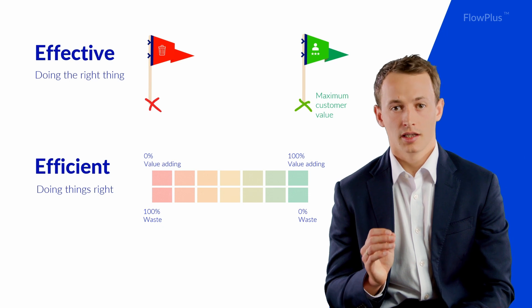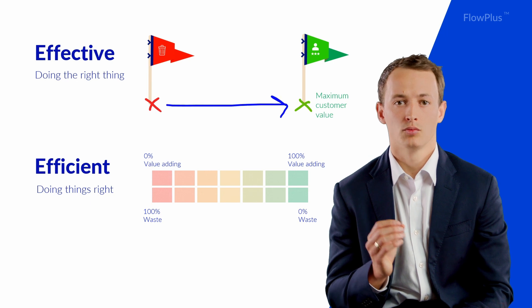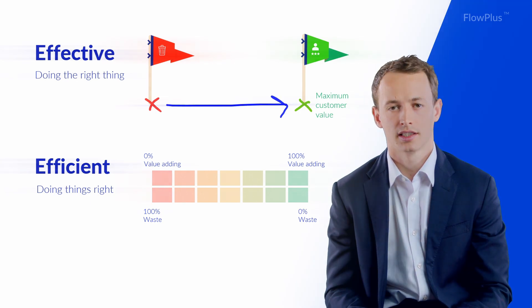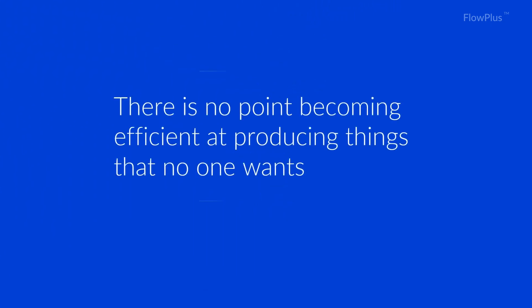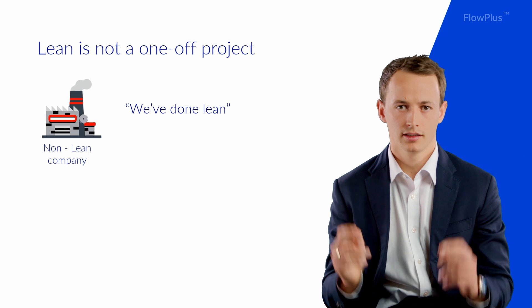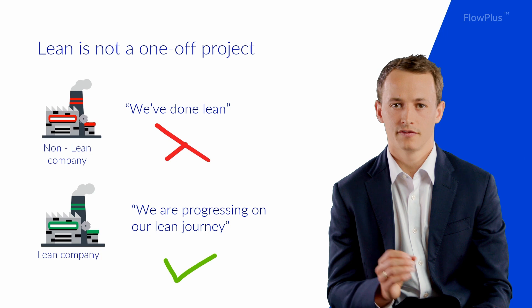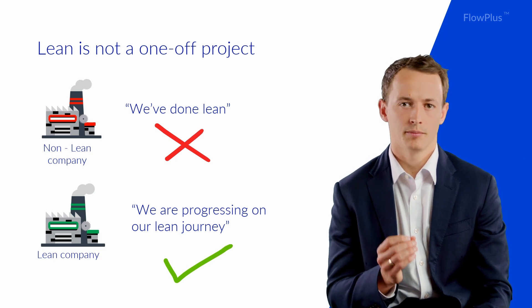The reason that effectiveness comes first is because understanding the customer and aligning with what they want should always be the first step of an organisation on their lean journey. There is no point becoming efficient at producing things that nobody wants. So lean is about being effective and efficient. True lean companies realise that becoming lean is not a one-off project. You can never say we have done lean or we are lean. Lean is a never-ending journey towards perfection — perfectly effective, aligned to your business goals and perfectly efficient.